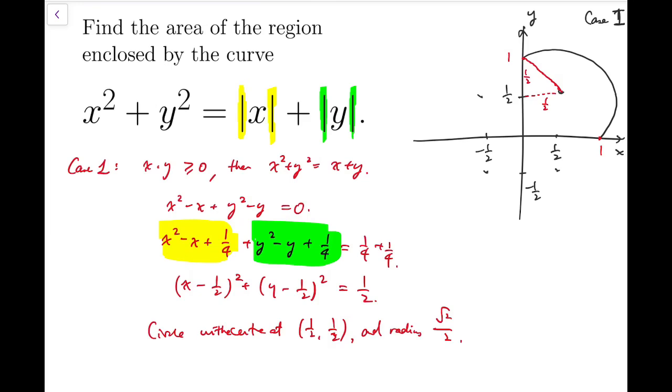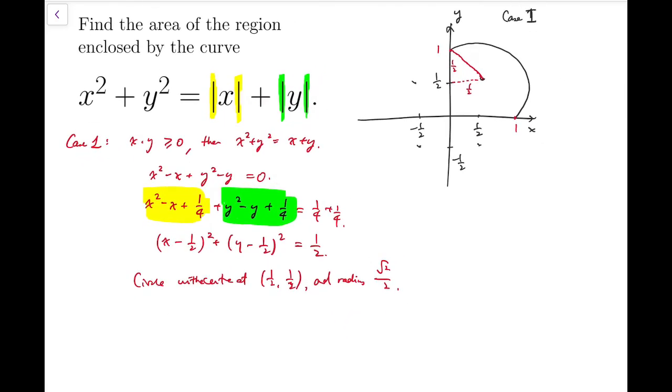Now you may notice that I've actually already even labeled the other three centers. Because you may notice that for the other so-called cases, cases 2, 3, and 4. x is now less than 0, while y is still positive. Then x squared plus y squared equals minus x plus y. And so we have this equation. Now the radius is exactly the same. It's just the center is slightly different. The center is located at minus half and a half. So we can draw the second part.